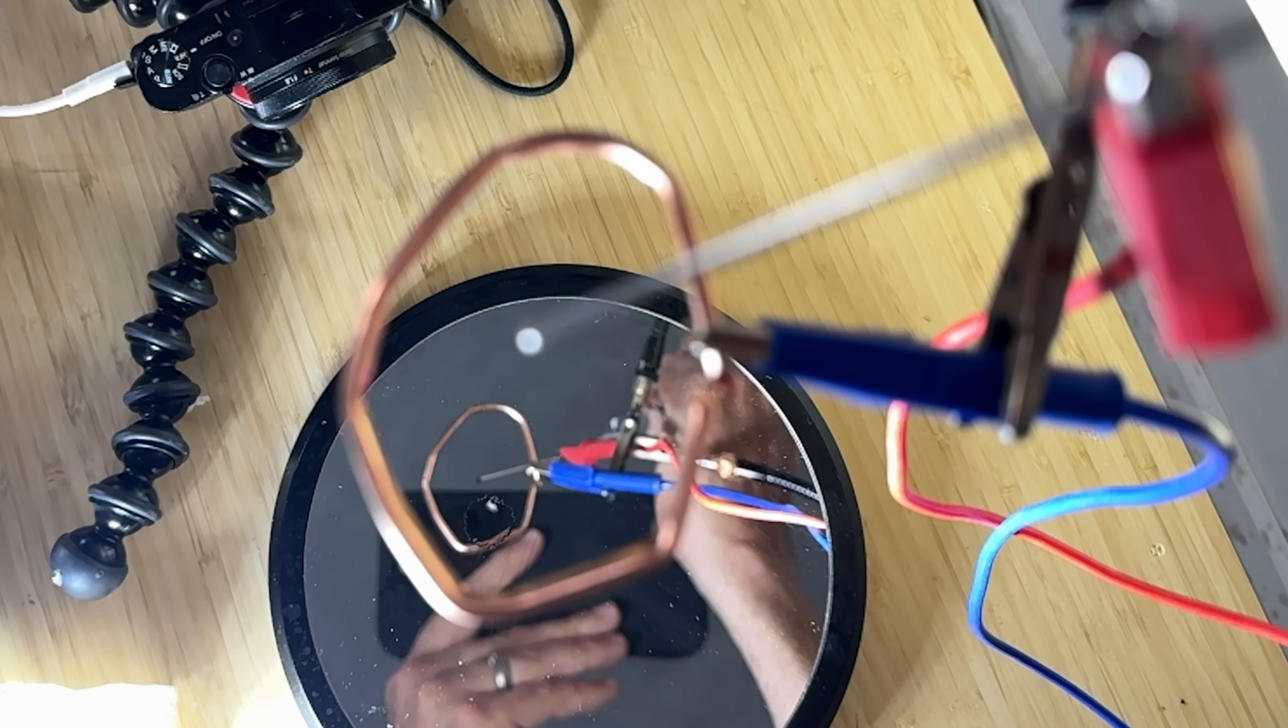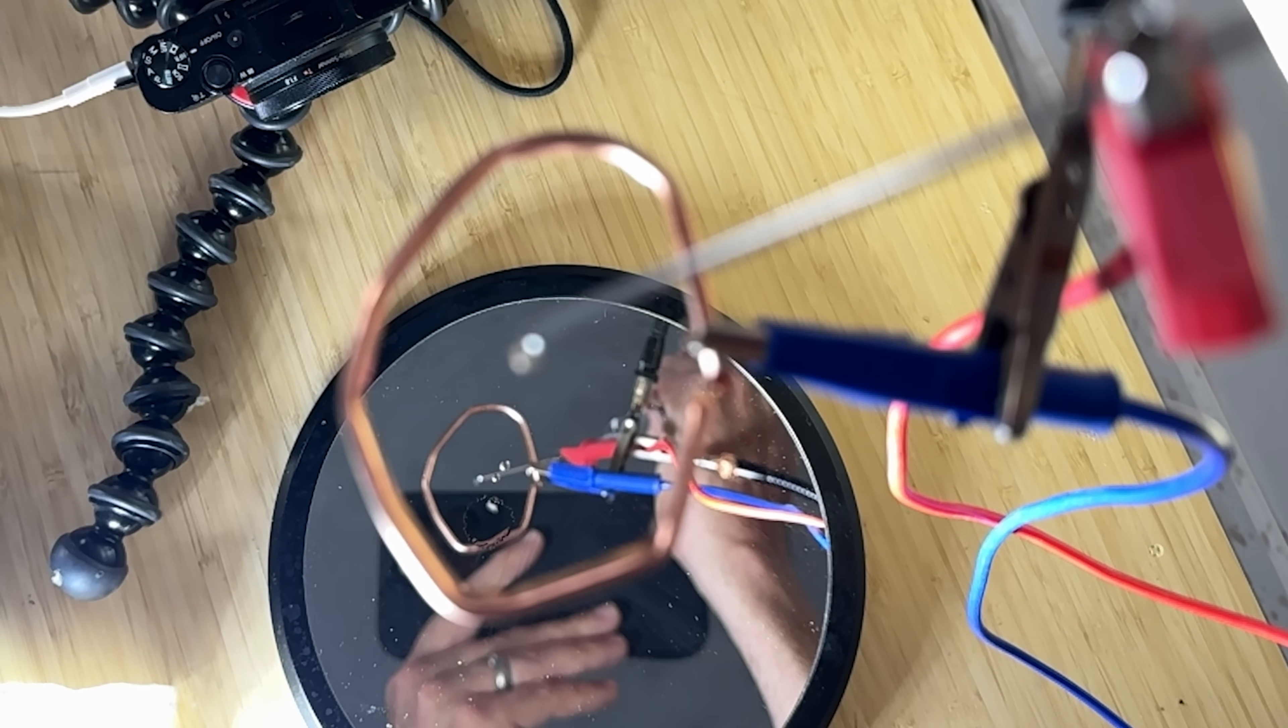If you charge a liquid to a few thousand volts, something amazing happens. This is a normal neutral drop falling on a hard surface. See the giant splash?